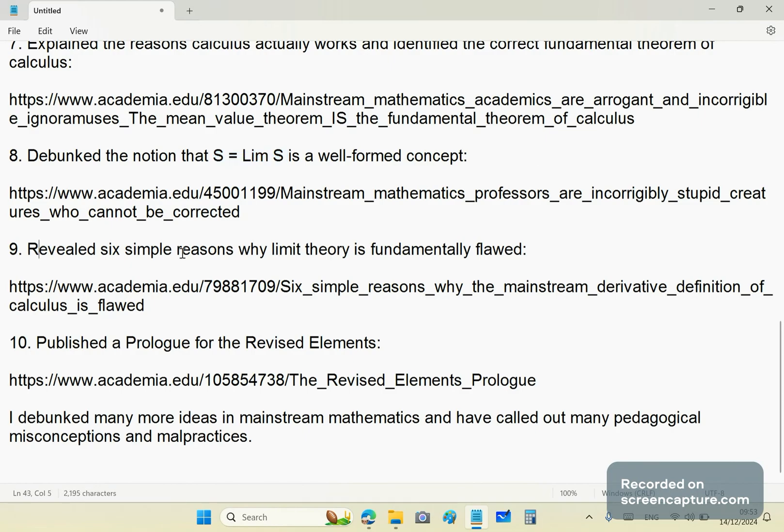Number nine: I revealed six simple reasons why limit theory is flawed, fundamentally flawed. Also another free article. Number ten: I published a prologue for the revised elements. The revised elements are not complete yet. It's a work in progress. But the prologue is something that should have been written by Euclid and the ancient Greeks. And I've done it for you.